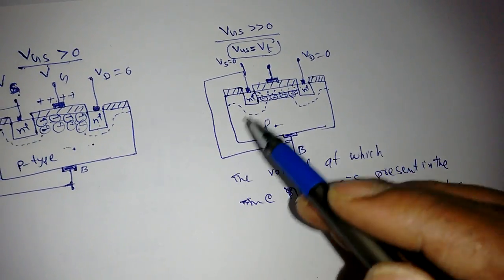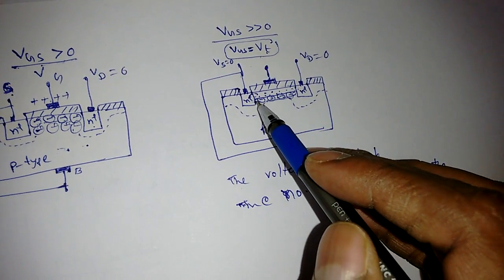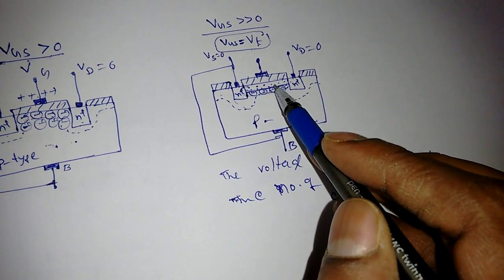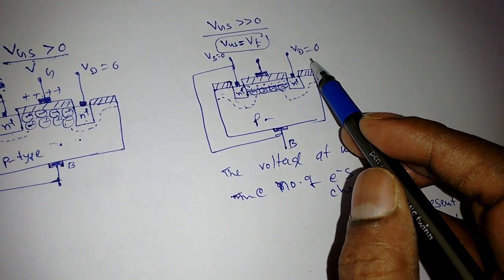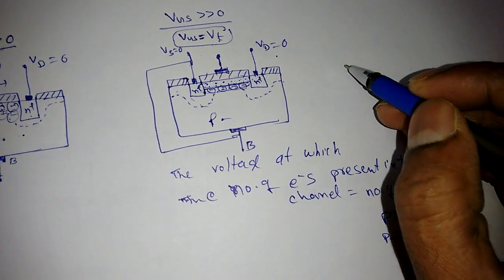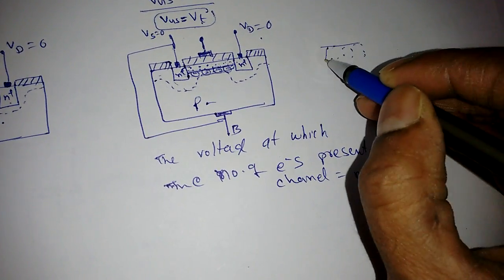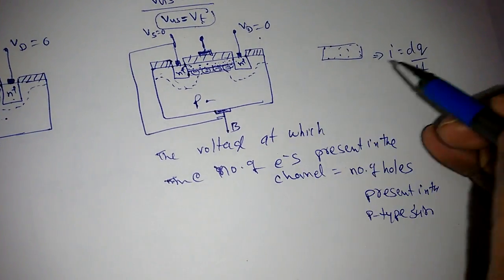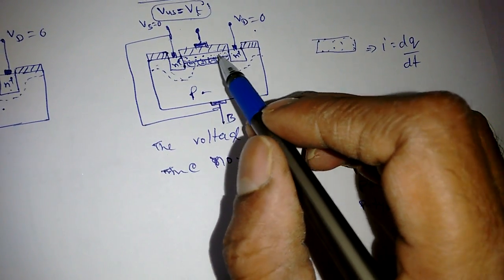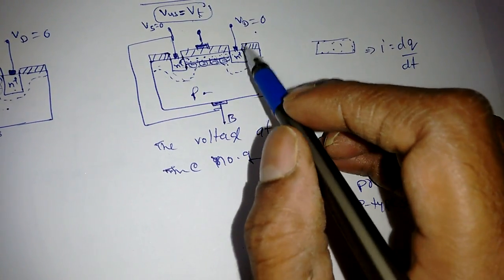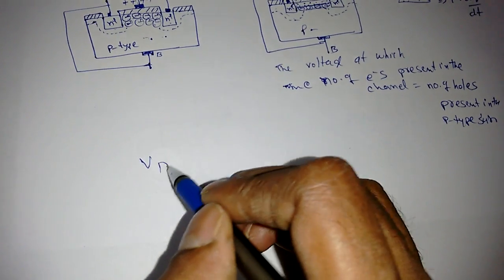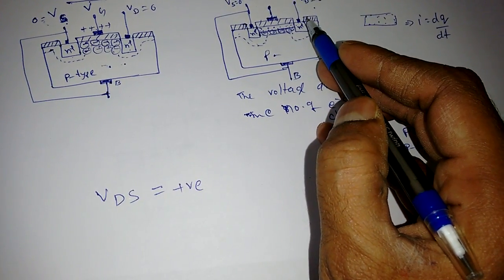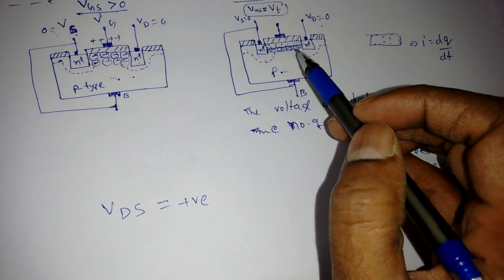At the threshold voltage, the channel is formed beneath the oxide, and a depletion region also exists. However, even with the channel present, there is no current flow until we apply V_DS. Current is defined as I = dQ/dt, meaning electrons must move per unit time. Unless the electrons move from source to drain, there is no current. When we apply a positive V_DS, the electrons in the channel are attracted toward the drain, and current begins to flow. The remaining operation will be discussed in the next lecture.